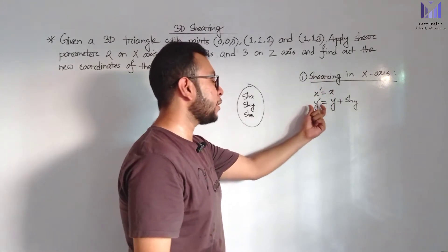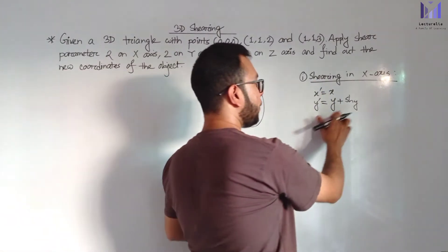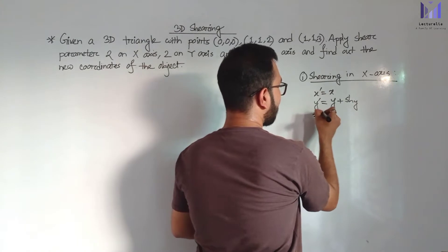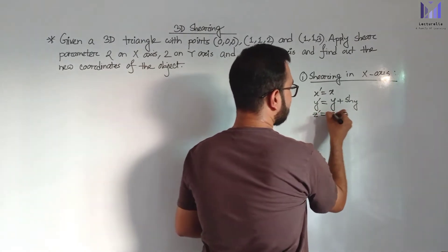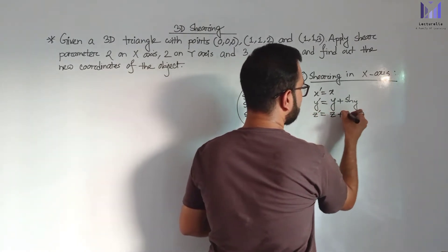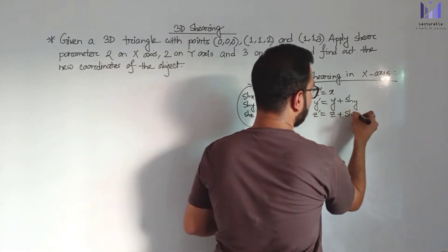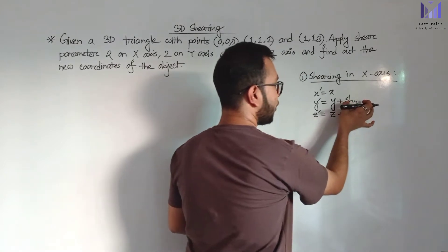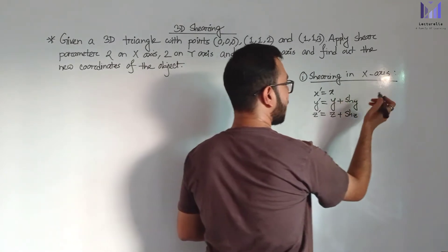The formula involves: X plus shearing parameter Y, Z; Y prime equals Y plus shearing parameter; Z prime equals Z plus shearing parameter Z.